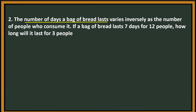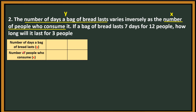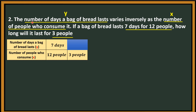First, we're going to assign variables. Number of days a bag of bread lasts — I'm going to assign Y. Number of people who consume it — I'm going to use X. For the table: number of days a bag of bread lasts is Y, and number of people who consume it is X. Given: 7 days for 12 people, so I'm going to place 7 days and 12 people. Next, how long will it last for 3 people? So I'll place 3 people here. The missing value is the number of days a bag of bread lasts for 3 people. Let us translate: number of days varies inversely — that is the keyword — as the number of people who consume it. So in equation form, that is Y is equal to K over X.